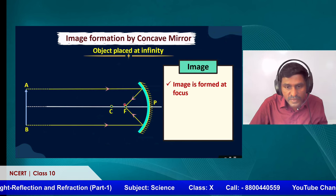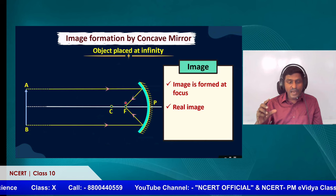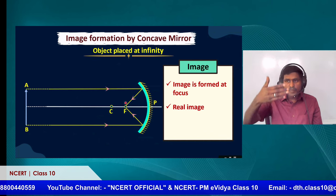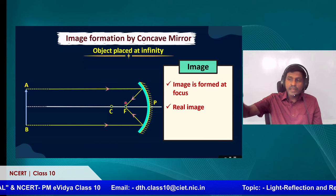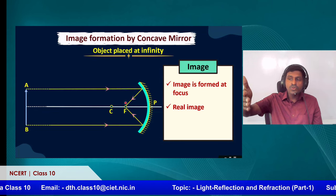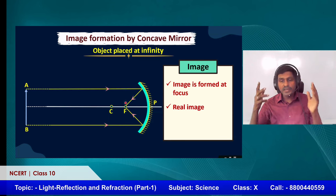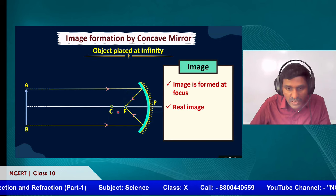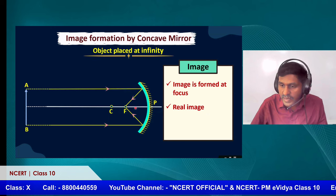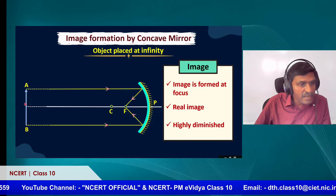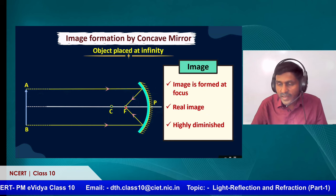The image formed at the principal focus is a real image. A real image means any image that can be captured on a screen. In a plane mirror, we see our image inside the mirror — that is a virtual image. But here, if you adjust the mirror's distance, you can capture the image on a wall or screen — that is a real image. The image is also highly diminished because all the rays merge at a single point, making it appear like a point.